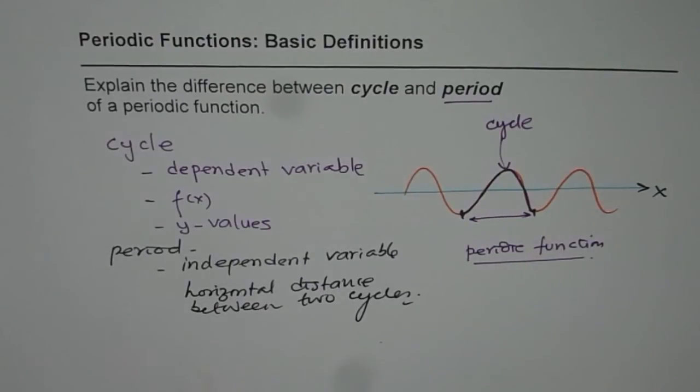So whenever we talk about cycle we are looking into the y values, the f of x, and the whole pattern will form one cycle. But when we say period, then it is the complete duration which a cycle takes, or a duration after which the next cycle starts. So that is the huge difference between these two terms. I hope it is clear. Thank you and all the best.